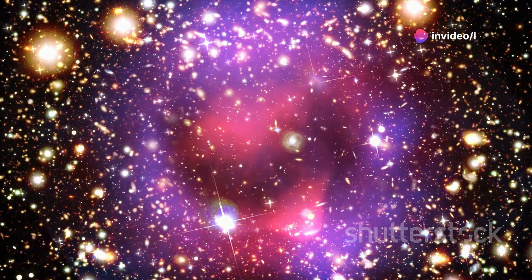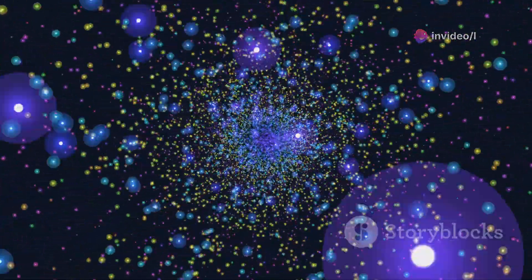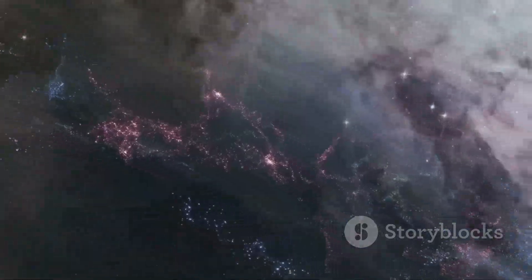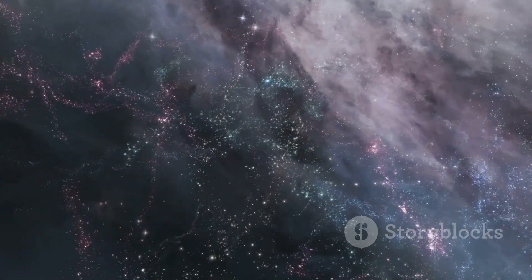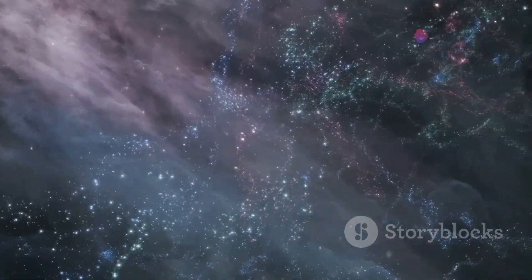These galaxies are not randomly scattered. They cluster together, forming vast cosmic structures. These structures, in turn, form filaments and voids, creating a cosmic web that stretches across the universe.